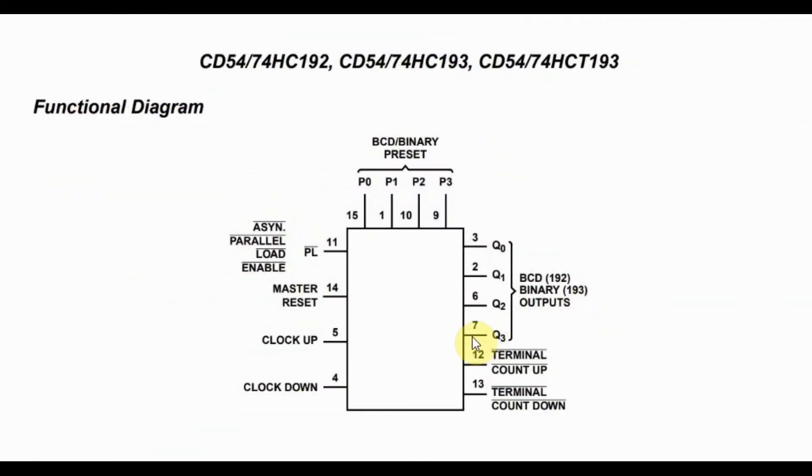To use the 74192 as a down counter, we apply the clock signal into pin 4 clock down, and we tie clock up pin to VCC.